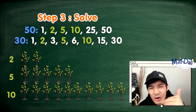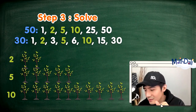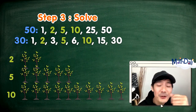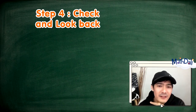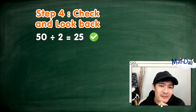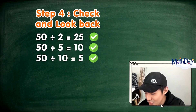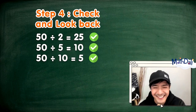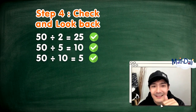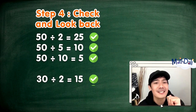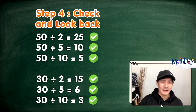Pwede niyo bang i-comment kung ano nga ba yung pang-apat na step? That is right — we need to check and look back. Let's check if 50 and 30 are divisible by 2, 5, and 10. 50 divided by 2 is 25; 50 divided by 5 is 10; 50 divided by 10 is 5 — check, check, check! 30 divided by 2 is 15; 30 divided by 5 is 6; 30 divided by 10 is 3 — check, check, check! Nakuha niyo ba yung sagot?